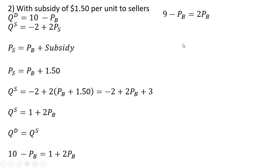So subtracting 1 from both sides, that's where the 9 is coming from, 10 minus 1. And then adding the price that buyers pay to both sides, we get 9 equals 3P subscript B. Dividing through by 3, the price that buyers pay in the face of a subsidy is $3.